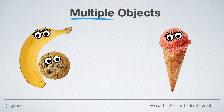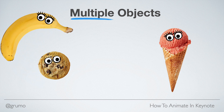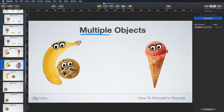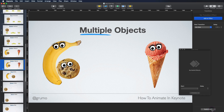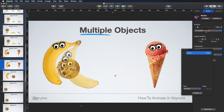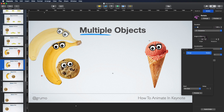We learned how to apply multiple actions to a single object, but you can also apply multiple actions and animations to multiple objects at the same time. Like in this animation where the banana is going to hit the cookie and make the ice cream disappear. Let's replicate this animation. We're going to click on Build Order to see all our animations, and the first thing we're going to do is have the banana rotate back a little bit. So we go to Action, Add Effect, Rotate, and we're going to make sure it rotates clockwise. We can adjust how far it goes — we don't need to go that far.